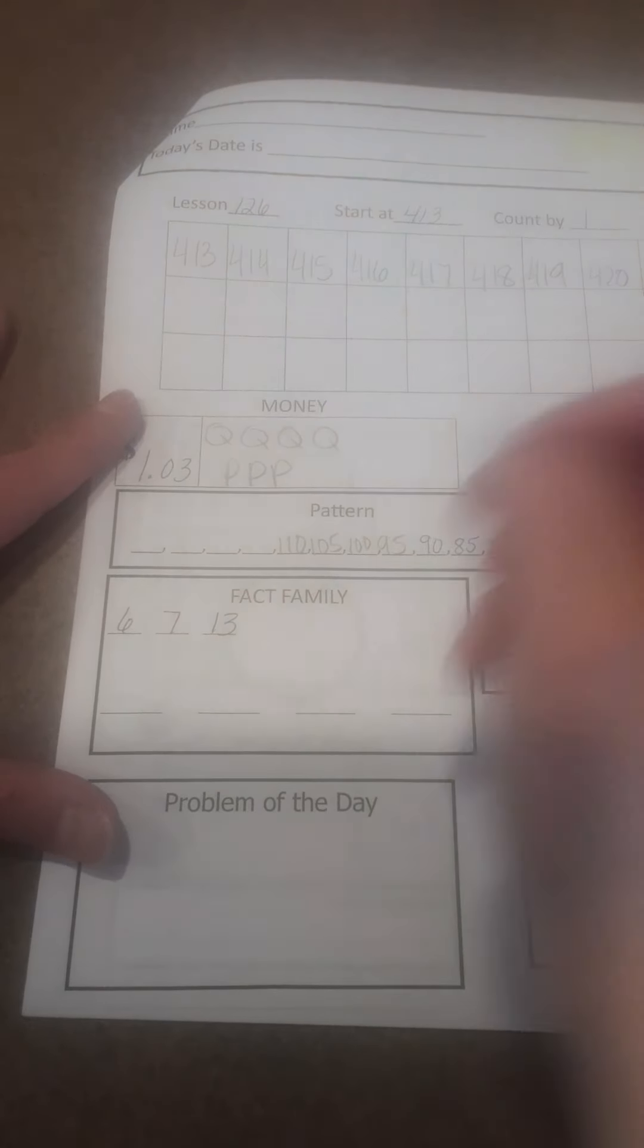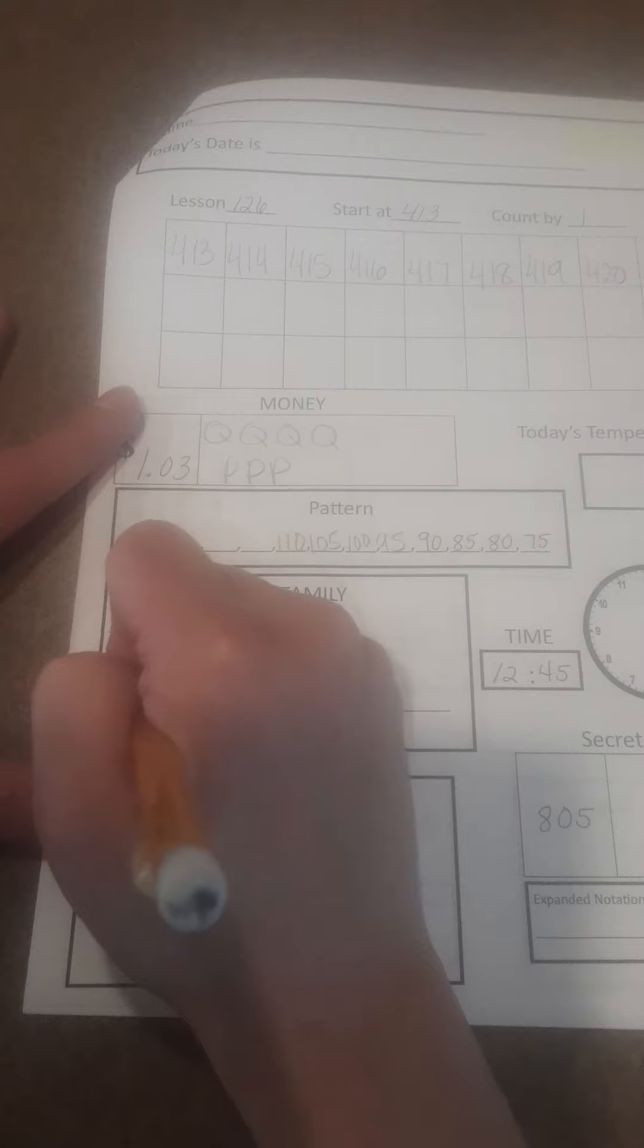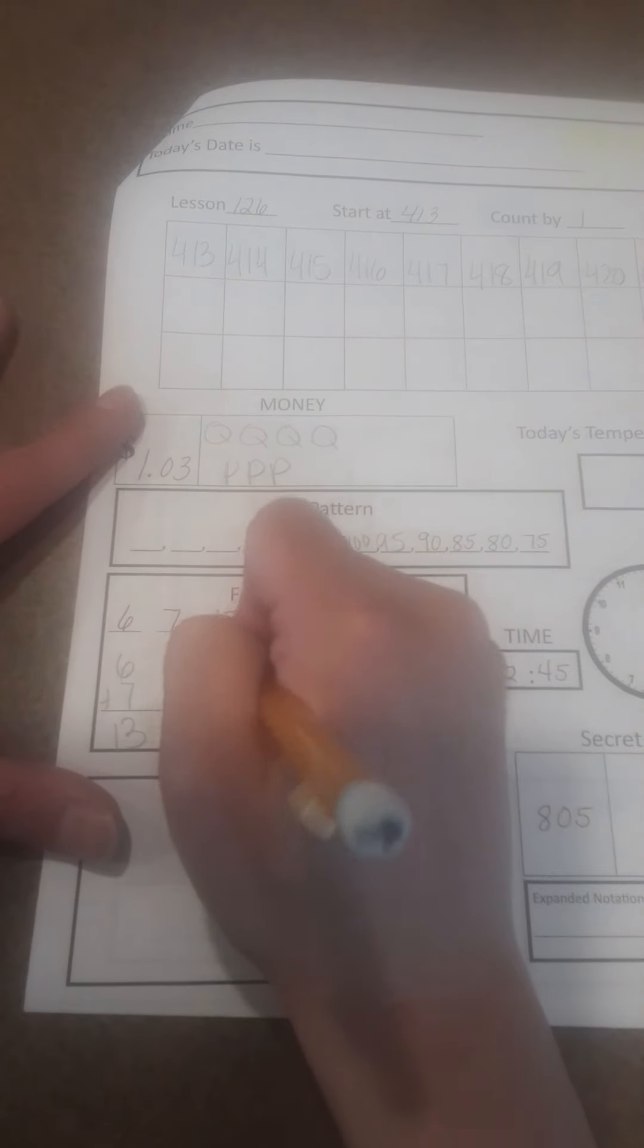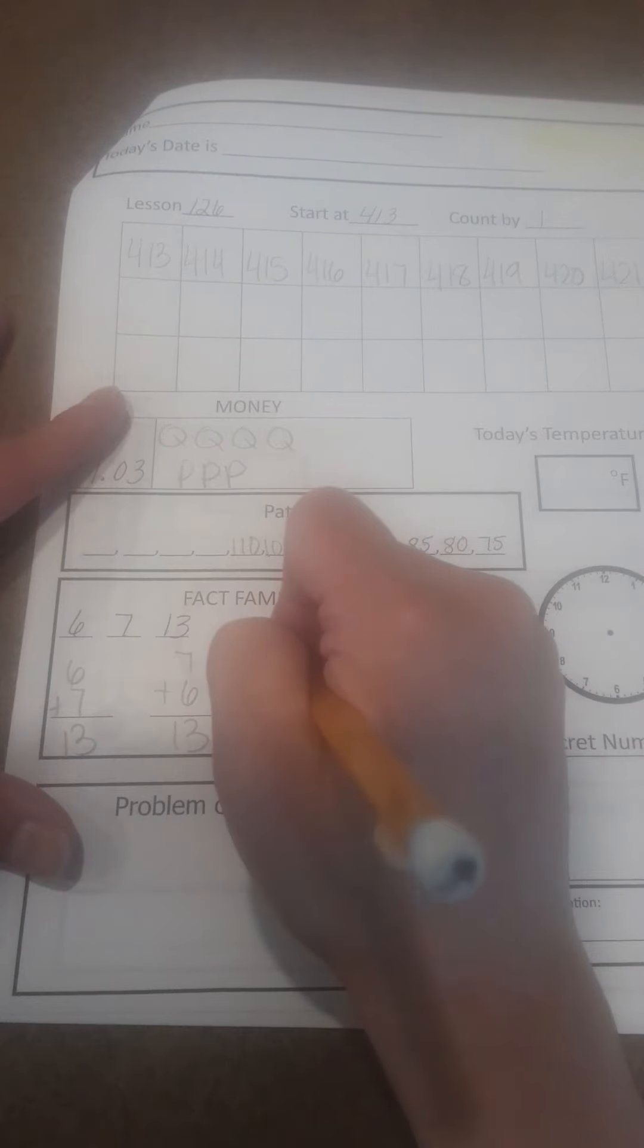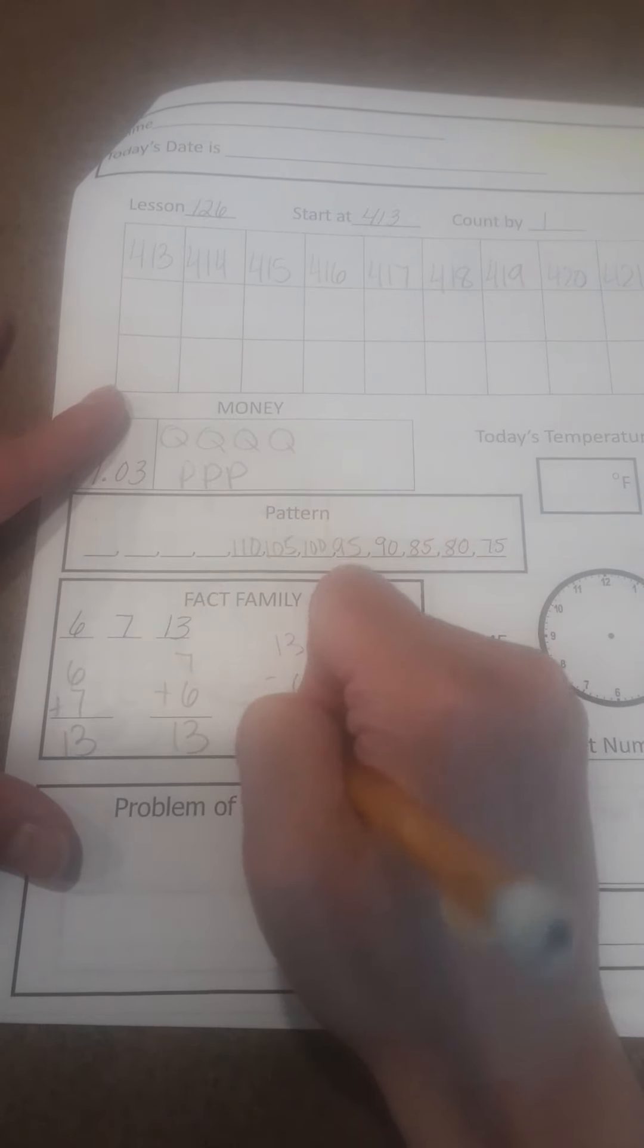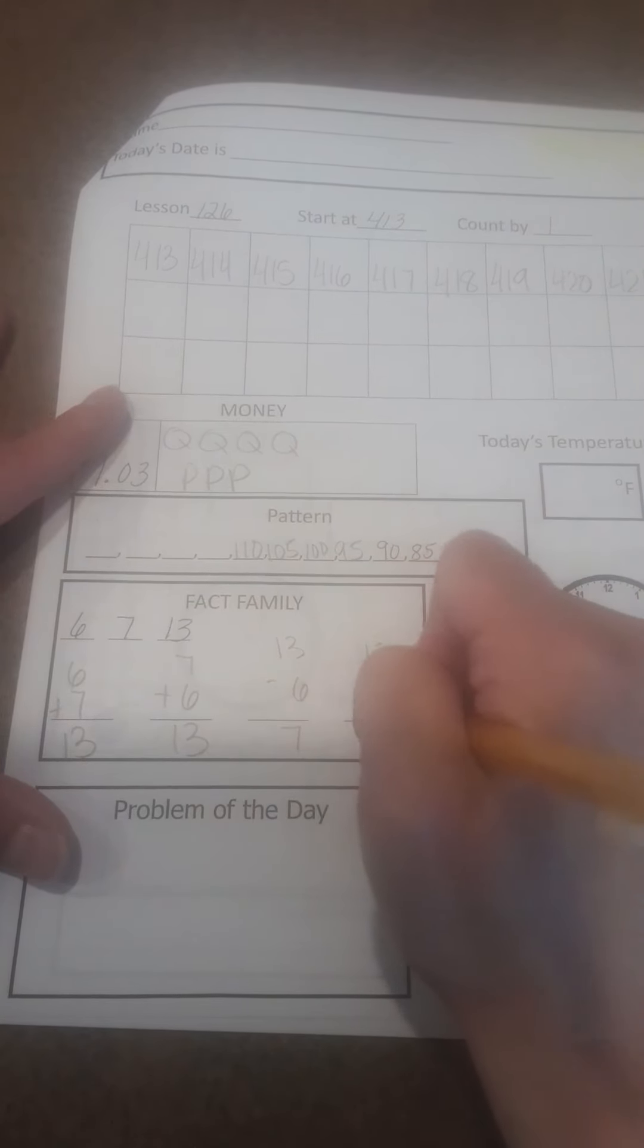Fact family, 6, 7, and 13. 6 plus 7 is 13. 7 plus 6 is 13. And 13 minus 6 is 7. And 13 minus 7 is 6.